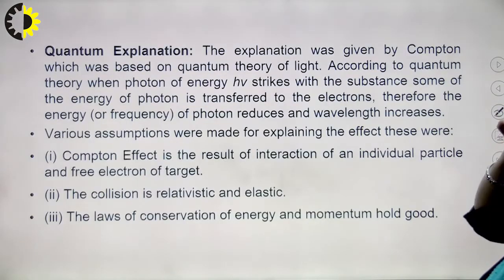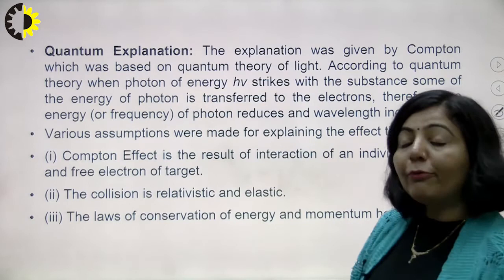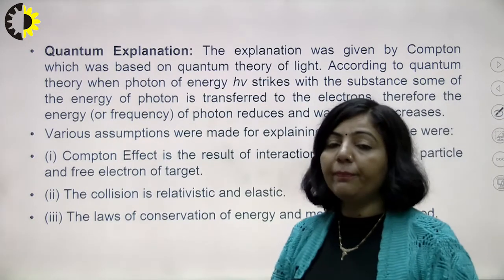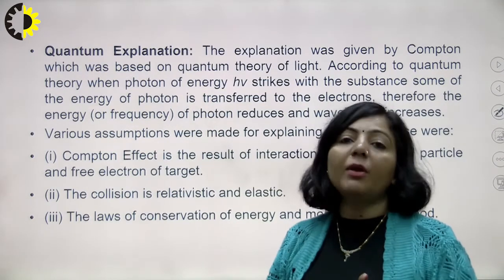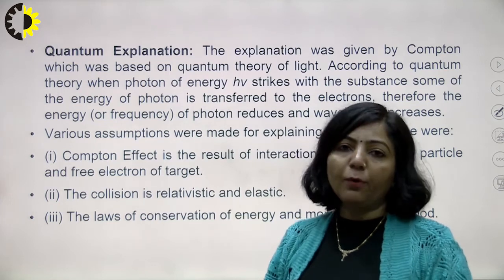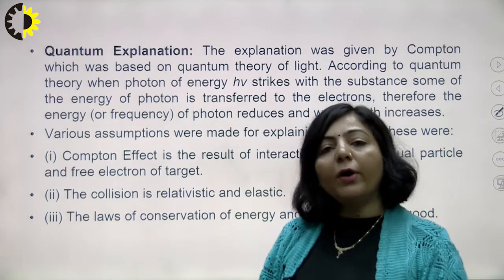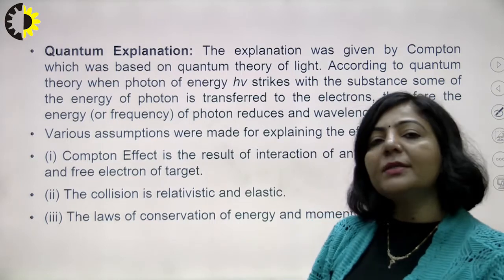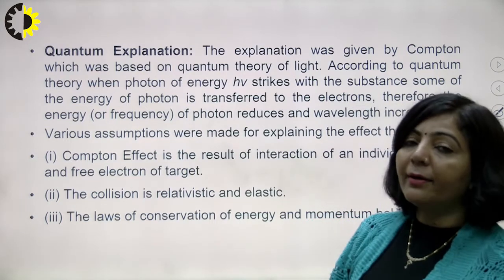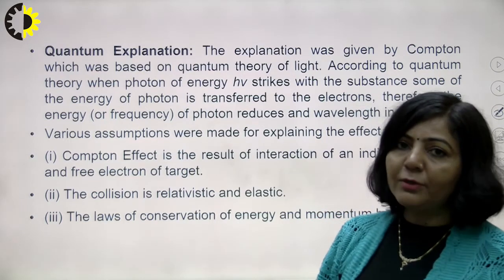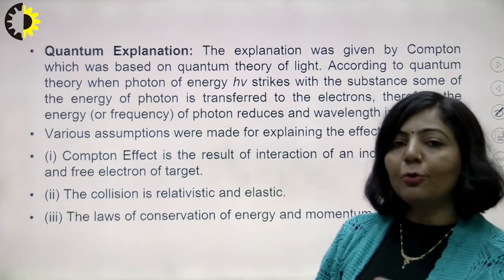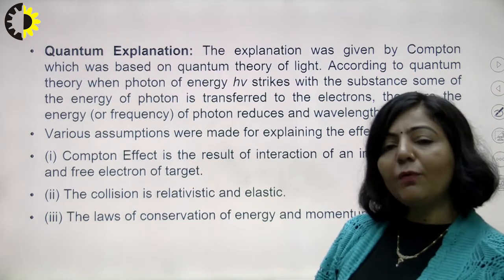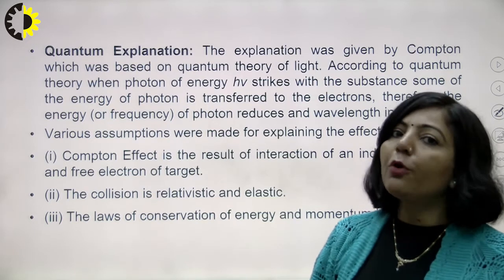Let us now discuss the Compton Effect in detail and derive a relationship for the change in wavelength. There are two types of scattered radiation — one of the same wavelength as incident light and another with greater wavelength. The difference in wavelength is known as the Compton shift, and we will find the expression for it.